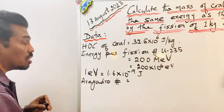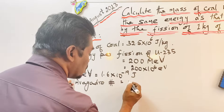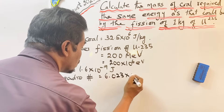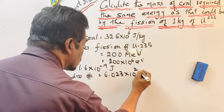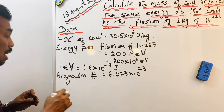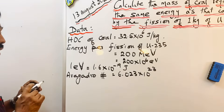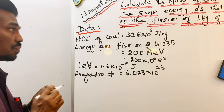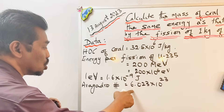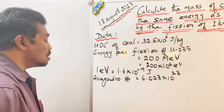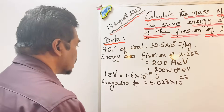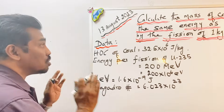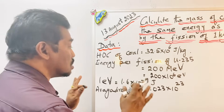The last piece of data is Avogadro's number, which will be helpful to find the number of atoms in 1 kilogram of uranium-235. Avogadro's number is 6.023 × 10²³. This means 1 molar mass of any element consists of 6.023 × 10²³ atoms.